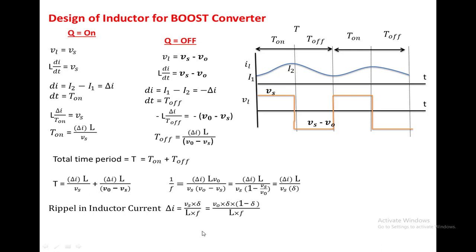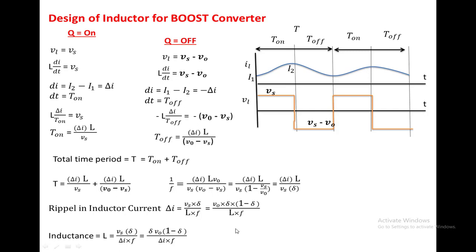If you want to find the ripple current in the inductor in terms of output voltage, replace Vs with V0 in terms of delta. We get delta_i equal to V0 into delta into (1 minus delta) divided by (L into F). From these expressions, if you find the value of inductance: L equals Vs into delta divided by (delta_i into F) from the first expression, or equivalently from the second. We can use either formula depending upon what values are available.